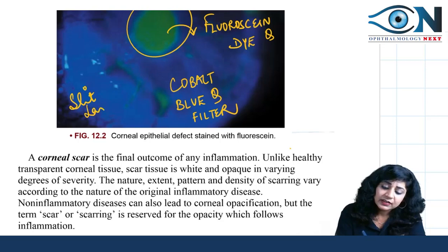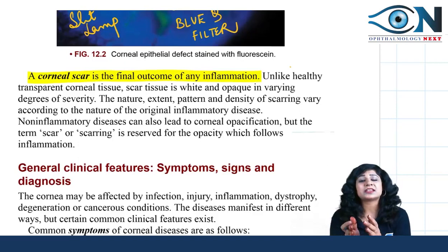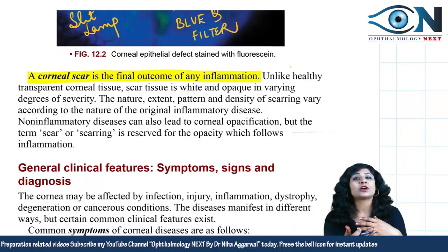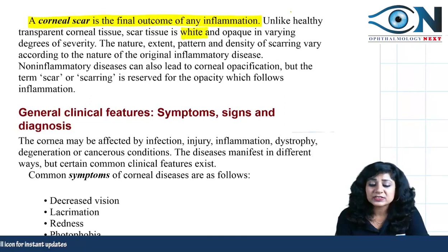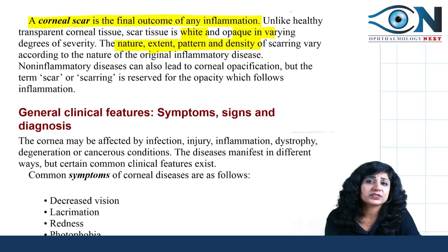Scarring is the final outcome. We have punctate keratitis, superficial keratitis, interstitial keratitis, stromal keratitis, endothelitis, erosion or abrasion, corneal ulcer, and corneal scar — all are different things. Unlike the highly transparent cornea, the scar will be white and opaque, and the extent and density of scarring depends on the severity and extent of the original disease.